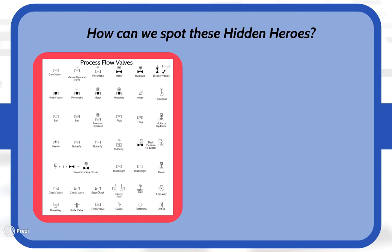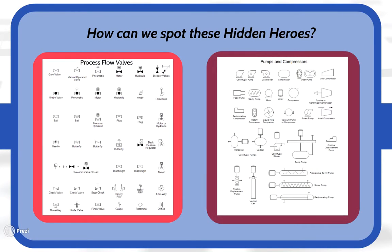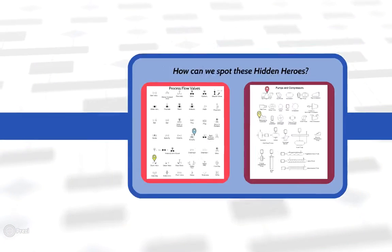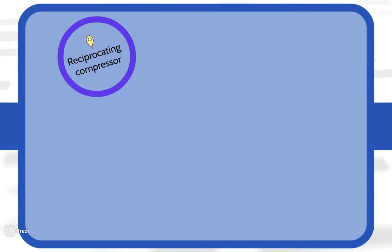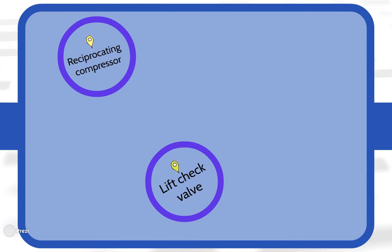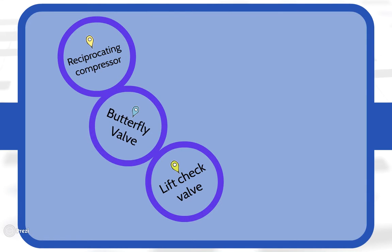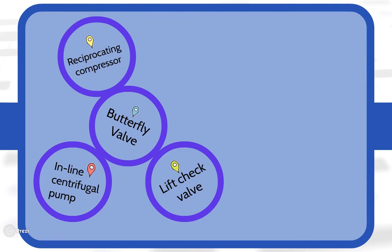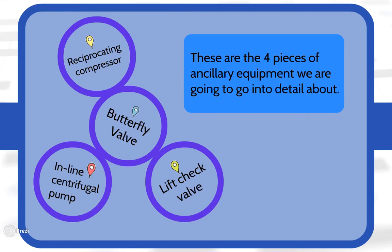Since it is in their nature to be well hidden, we need aid to help identify them. These two diagrams contain some of the symbols used to identify them. Take a note of the pinpointed symbols. Reciprocating compressor, lift check valve, butterfly valve and the inline centrifugal pump are the hidden heroes we are going to go into detail about. It is important to understand that there are many others such as the gate, globe and plug valves as well as pumps and compressors.